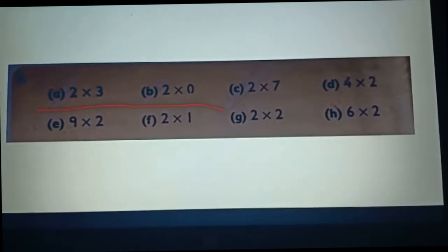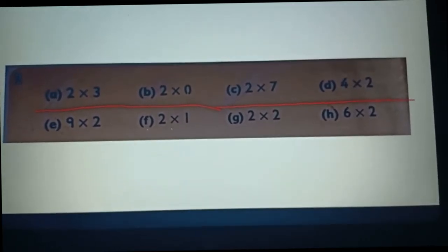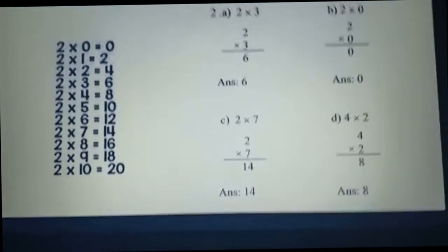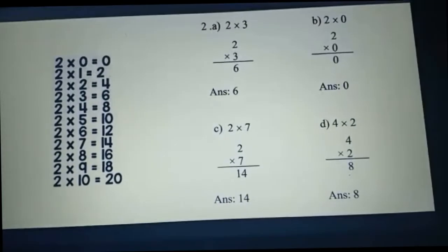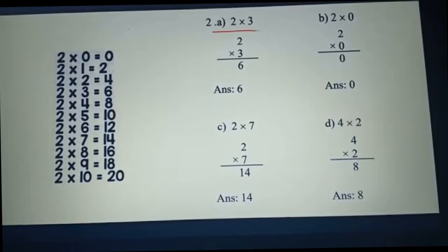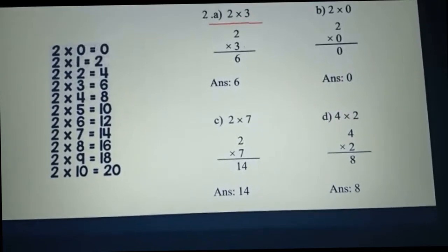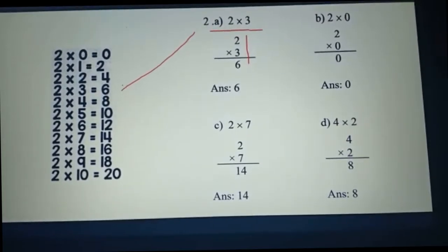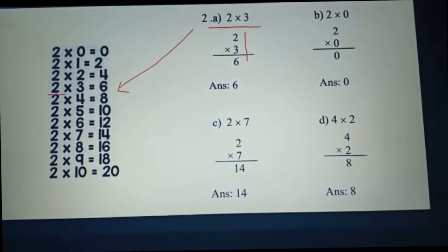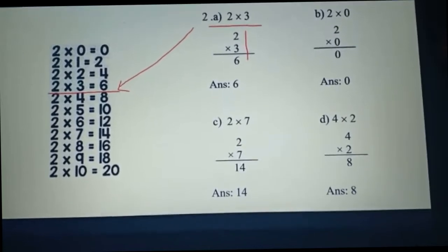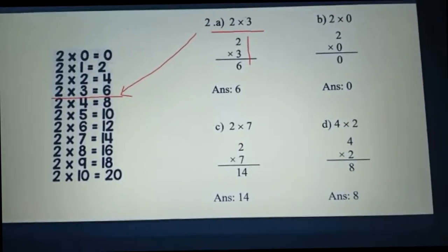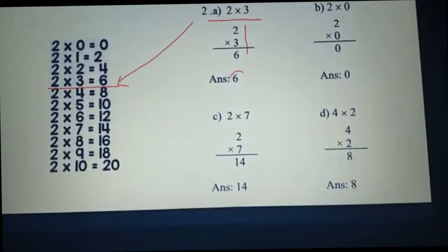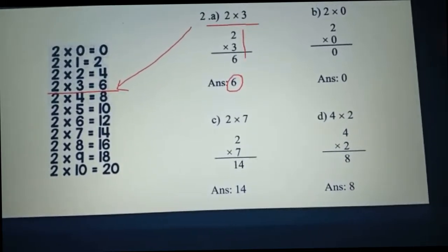You have to solve E, F, G, H by yourself. Number A: two multiply by three. Two threes are six, so if we multiply two by three we get the answer — the answer will be six.